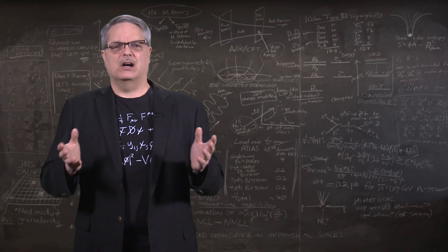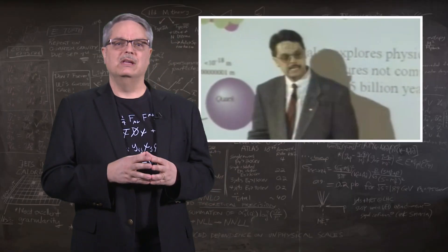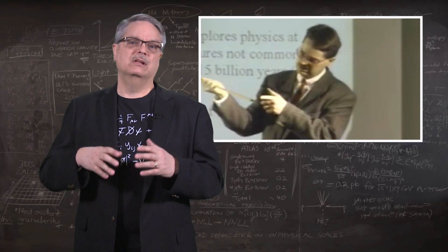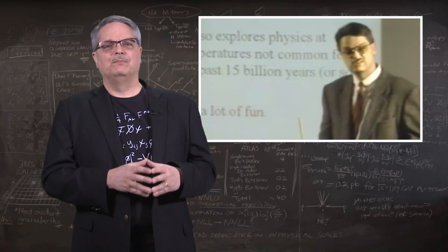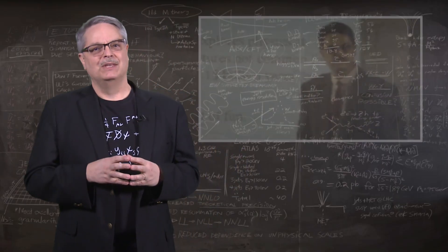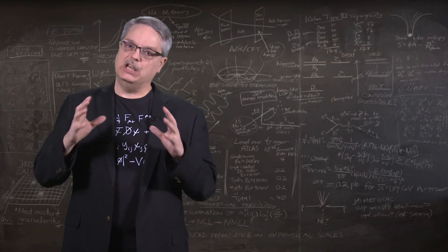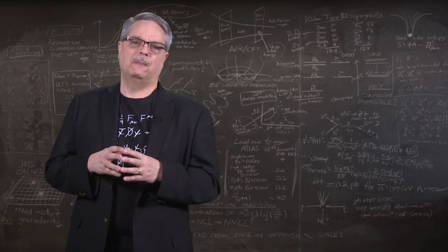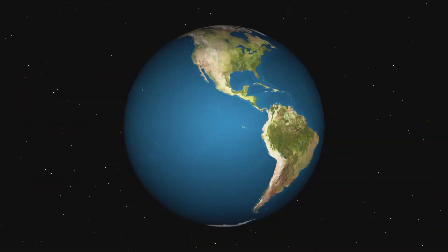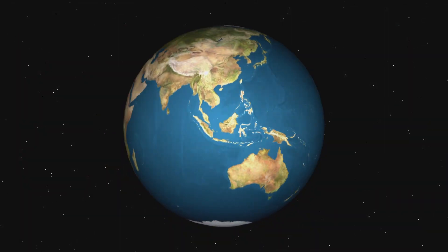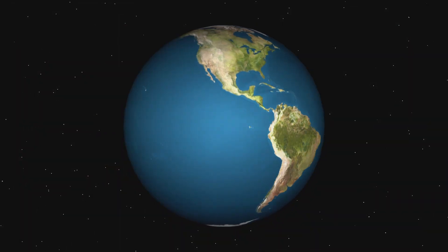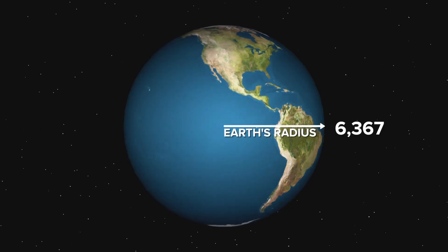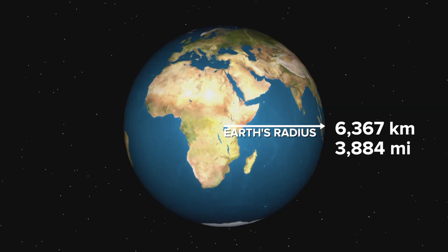So that might sound a little dodgy, and I admit when I was a much younger student, I sort of rebelled at the idea. But let me give you some examples that might make you feel better about this approach. Let's start with a familiar one. Suppose I needed to know with some precision the shape of the Earth. Depending on just how precisely you need to know it, you'll get a different answer. So the simplest answer to the shape of the Earth is that it's a sphere. We've seen pictures of it from NASA, and there's no doubt that this is a very good approximation. The Earth is basically a sphere with a radius of 6,367 kilometers or about 3,884 miles.